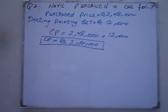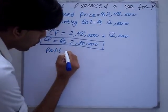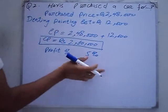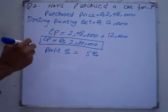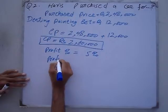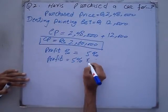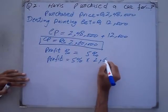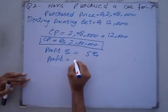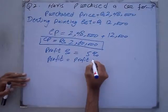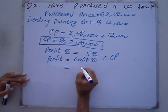Next we will find the selling price. Profit is 5% of the cost price, which is 2,60,000. Profit equals profit percentage times cost price. Profit percentage is 5% and cost price is 2,60,000.